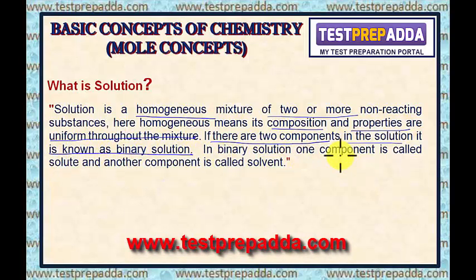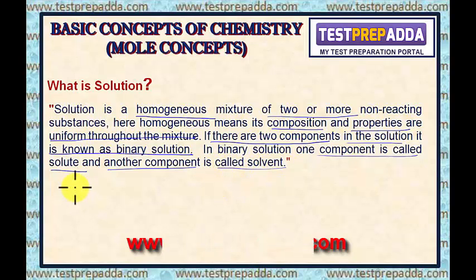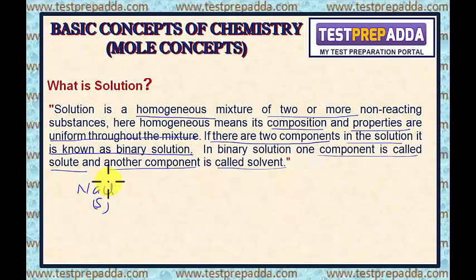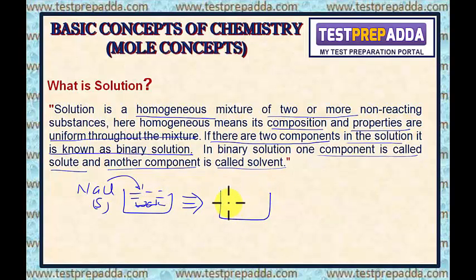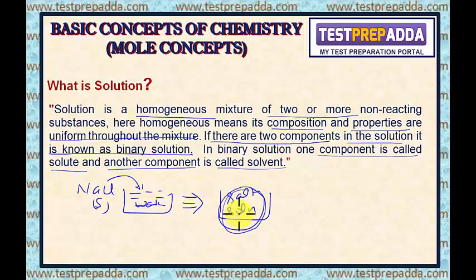In binary solution, one component is called solute and another component is called solvent. If I take NaCl salt, if this NaCl solid is put in water, then the solution obtained will have the physical state of liquid — a single phase, homogeneous. The composition is the same throughout the solution.